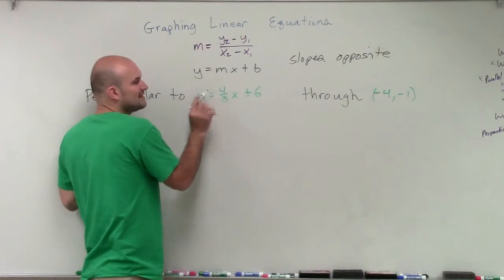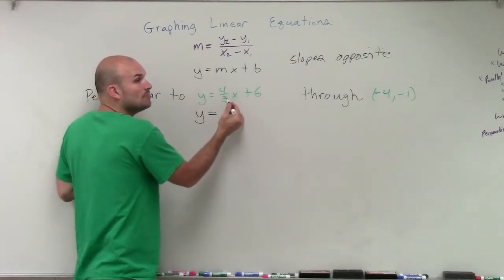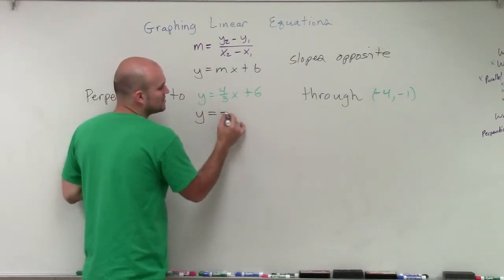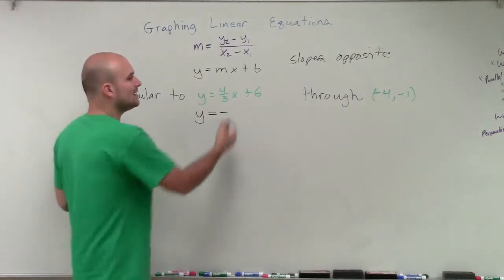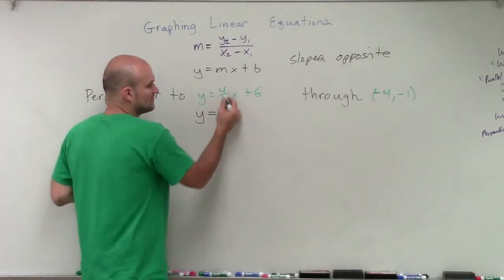So in this case, I need to find a line that's perpendicular to this. Well, this slope is positive, so therefore my new slope has to be negative. And also, the slopes are reciprocals of each other.